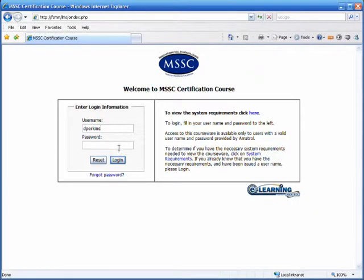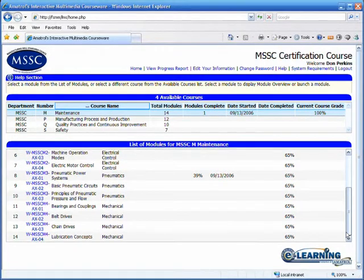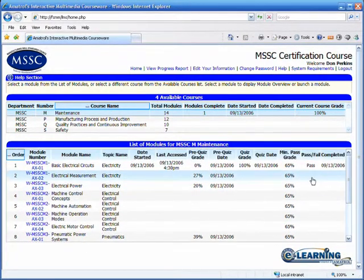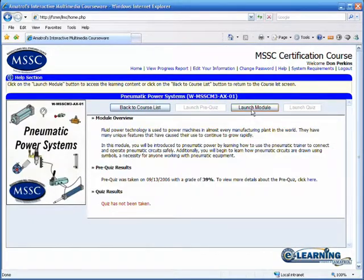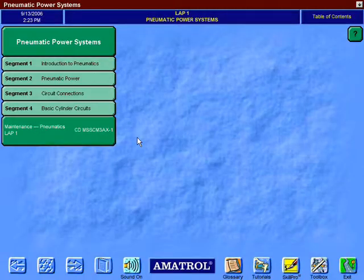Once connected online the student has access from a simple menu to any of the e-learning units included in the MSSC course in which they are enrolled. After the student selects a unit the e-learning system displays the unit's table of contents and the student can commence learning.